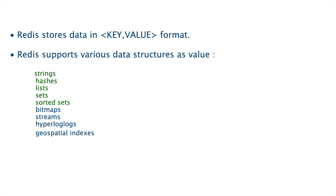Redis stores data in key-value format — it is very similar to MemcacheDB, which also stores values in key-value format. But the main restriction with Memcache is that it only makes use of blob as a data type, so whenever you want to retrieve something from Memcache you have to serialize it into a certain data structure to display in the UI.